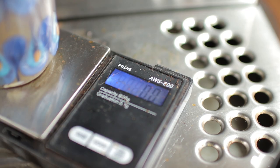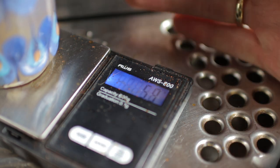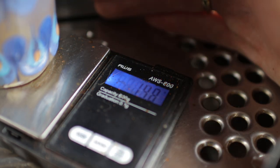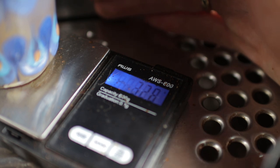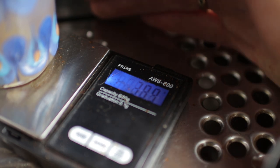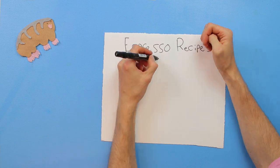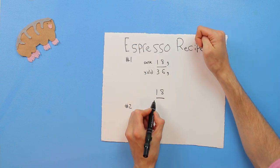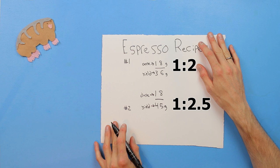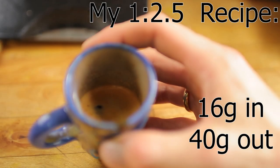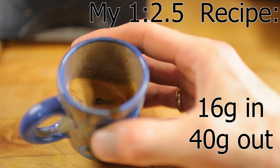Yield is the measure of the mass of espresso as it has left the machine. I set a goal yield for myself and stop the flow when it hits it. The recipe combines the dose and the yield and is an effective way to summarize how you're brewing your espresso. I like shots on the slightly watery side, so I usually use a recipe of 1 to 2.5 or 1 to 3 — meaning for every gram of coffee in the portafilter, I wait for 2.5 to 3 grams of water to flow out into the cup.